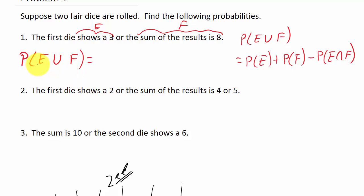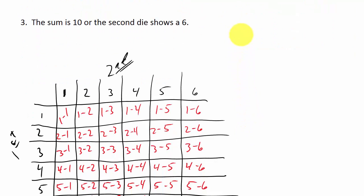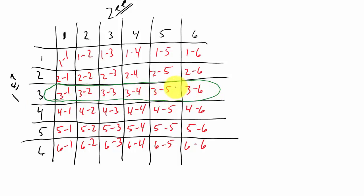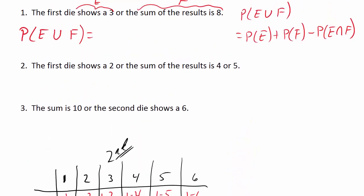Let's find P(E), the probability the first die shows a 3. Looking at this row where the first die is a 3, there are 6 outcomes. So P(E) = 6/36.